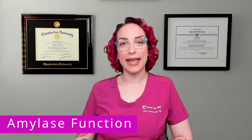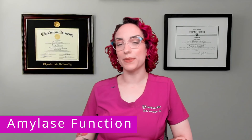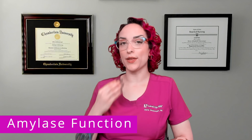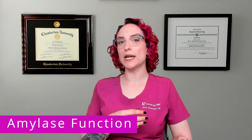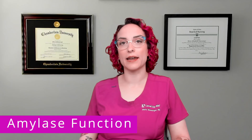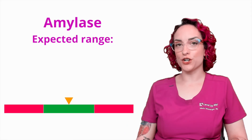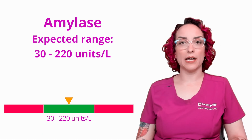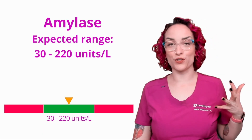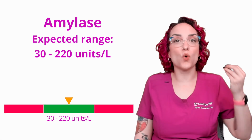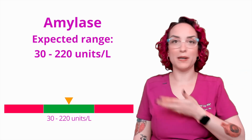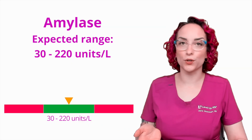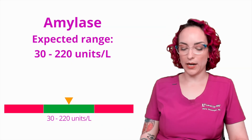First up we're going to talk about the lab value amylase. Amylase is a digestive enzyme that's used to break down carbohydrates. It is produced both in the saliva but also in the pancreas — it's a pancreatic enzyme. The expected range is going to be 30 to 220 units per liter. We are expecting a good amount of this; it is a normal thing to have in the body. It should be making it, using it to break down carbohydrates, so we don't want this one to be super close to zero — it can go all the way up to 220.